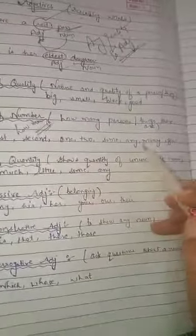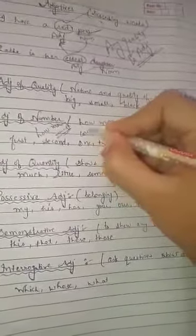So first, second, one, two, some, any, many, few. These are adjective of number and don't forget these are used with countable nouns. Countable nouns means the nouns which can be counted.